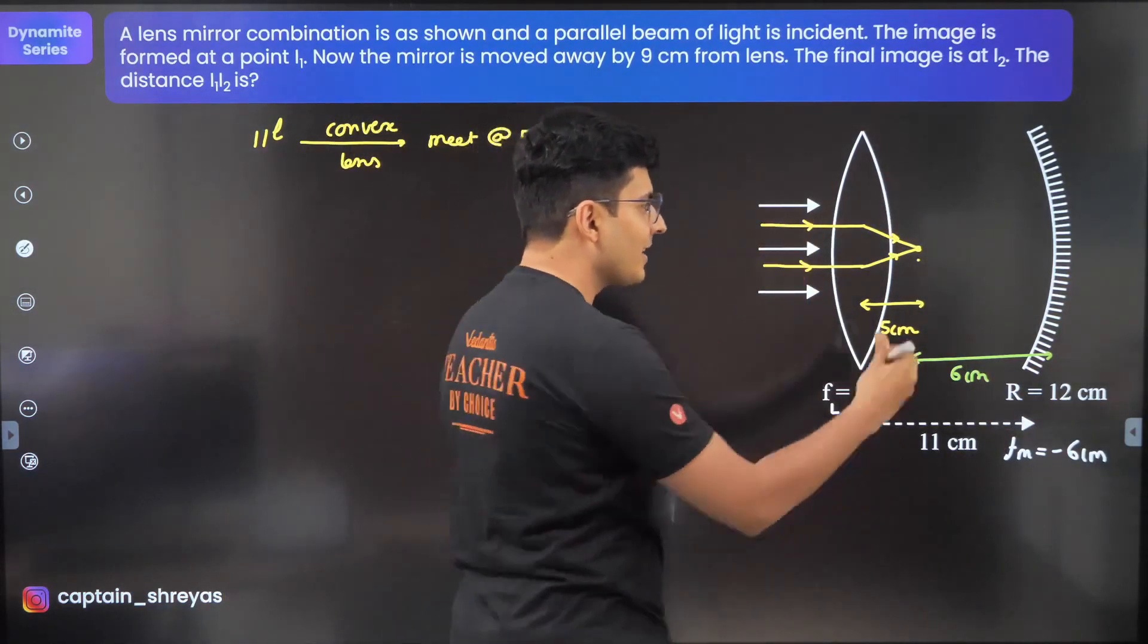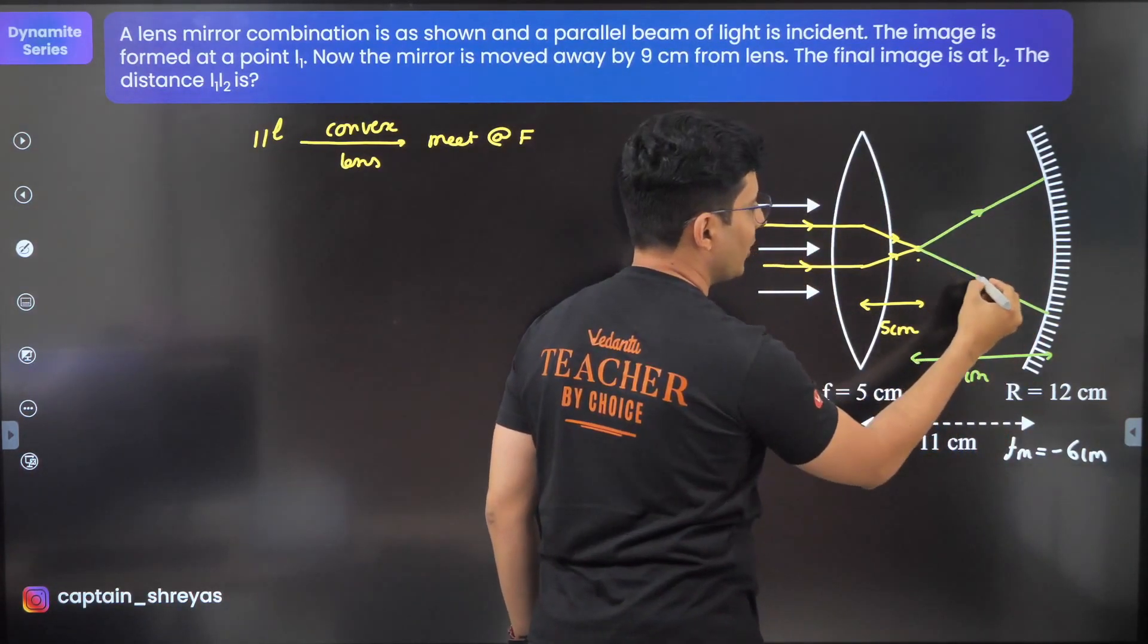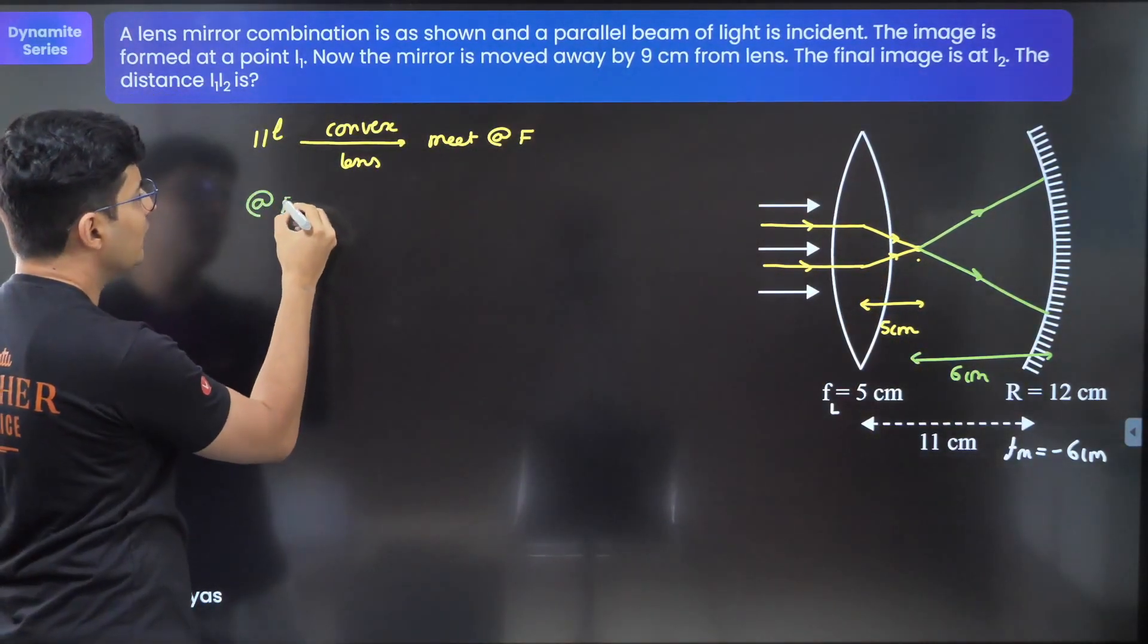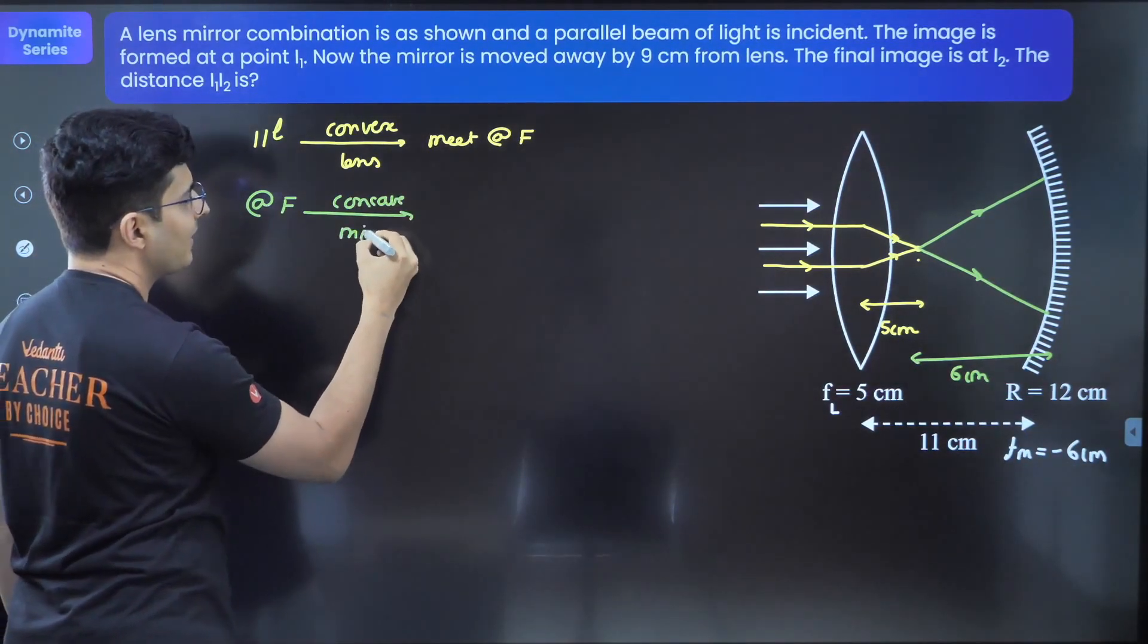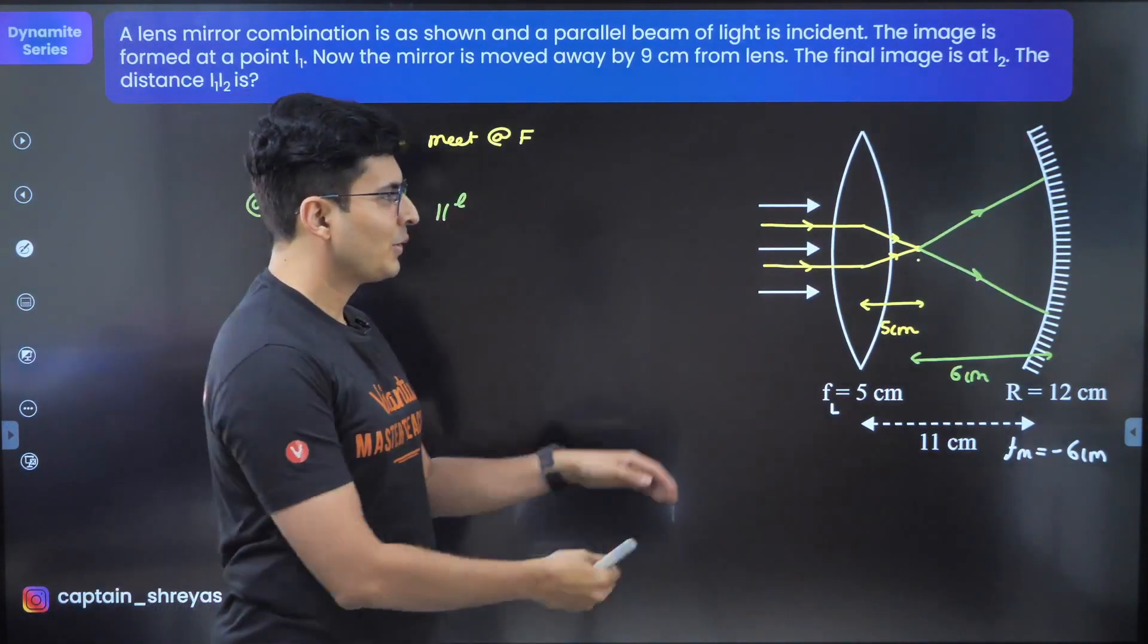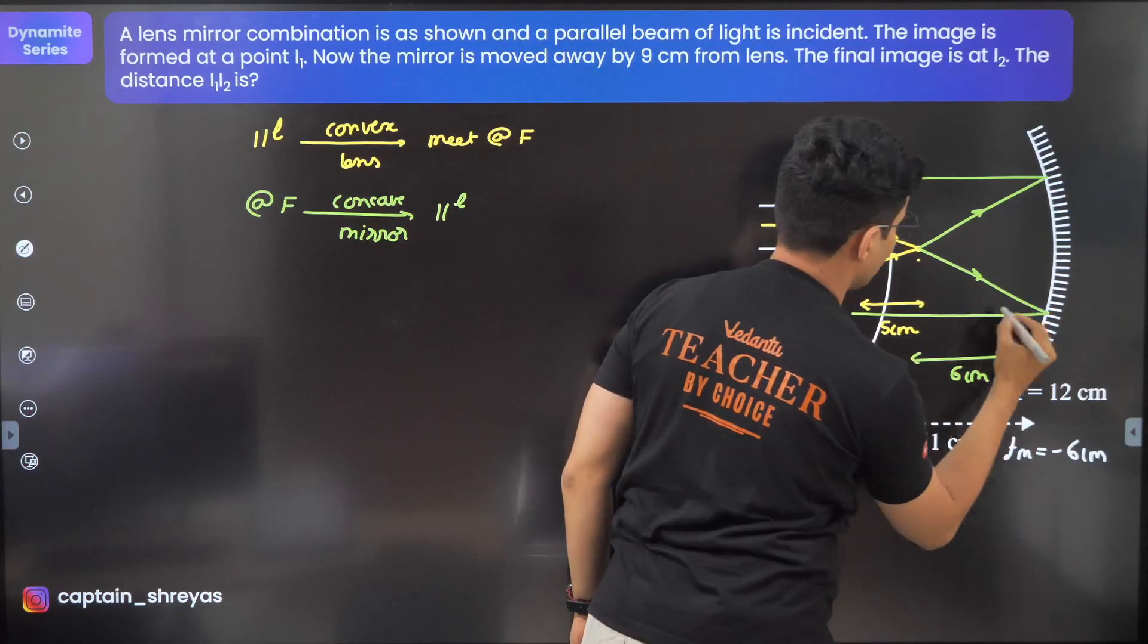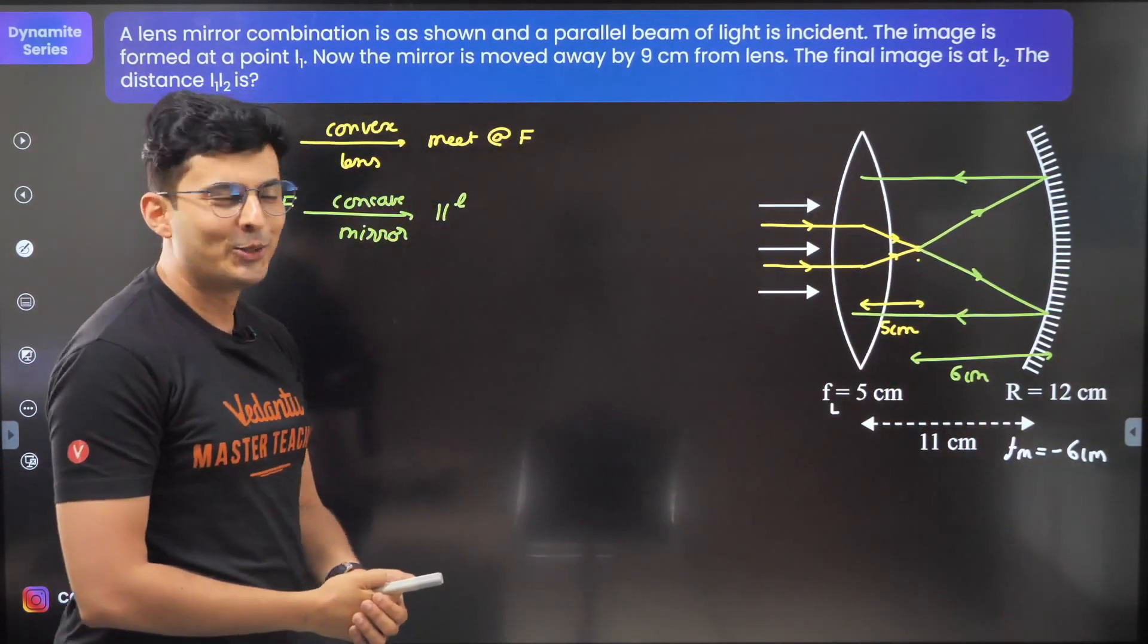These rays will as if start originating from the focal point. They continue their journey from the focus of the mirror. We know that if you are at the focus for a concave mirror, the rays become parallel. These rays passing through the focus will become parallel, so they are coming back.